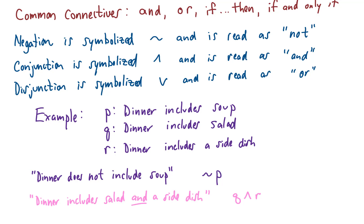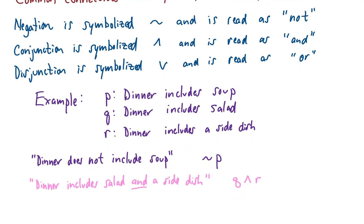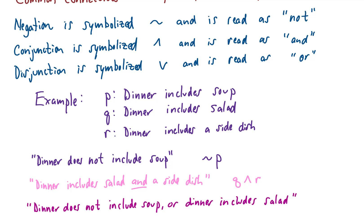These can get more complicated. If we want to say 'dinner does not include soup, or dinner includes salad', that compound statement would be represented by ~p ∨ q — 'not p' meaning dinner does not include soup, and q meaning dinner includes salad. So in symbolic form, this long statement would be 'not p or q'.